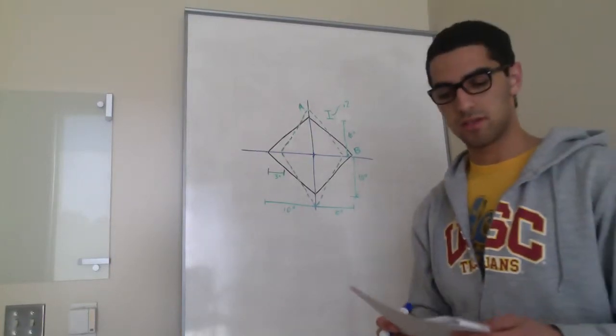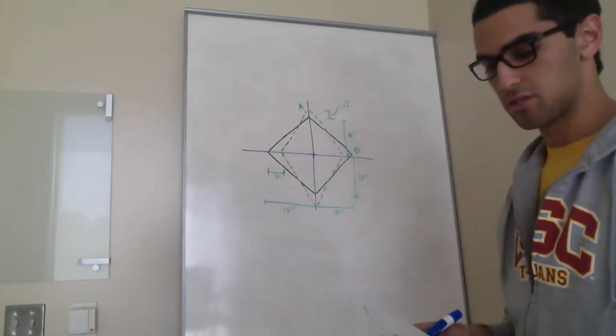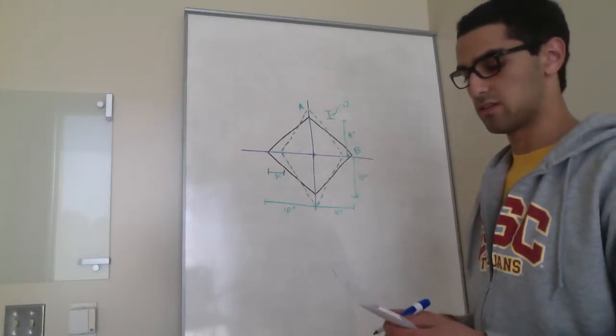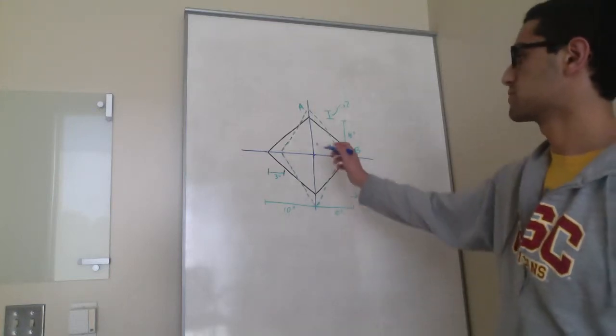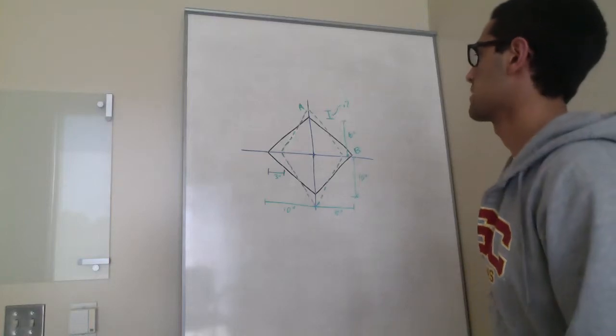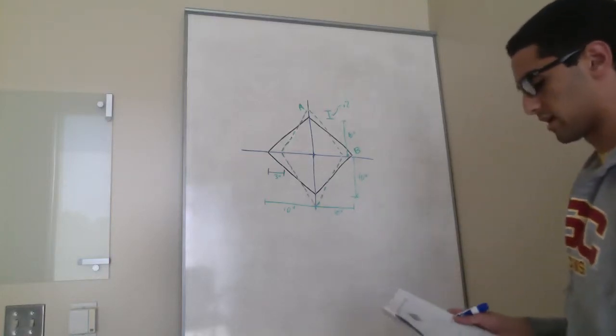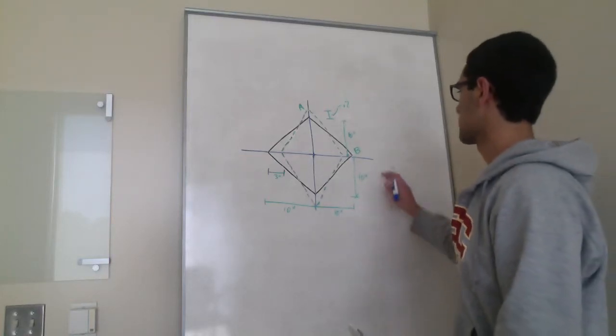The corners of the square plate are given the displacements indicated to determine the shear strain in radians along the edges of the plate at A and B. The displacements are indicated by the dotted lines. So let's first look at it at A.